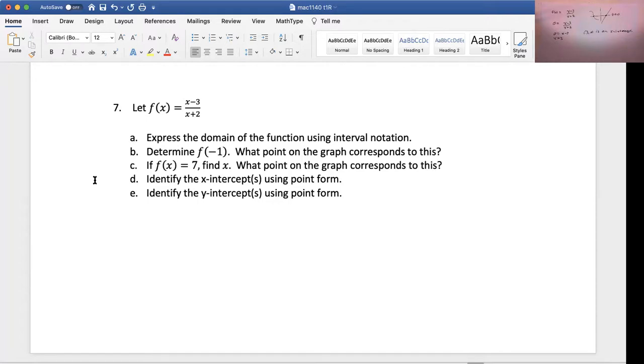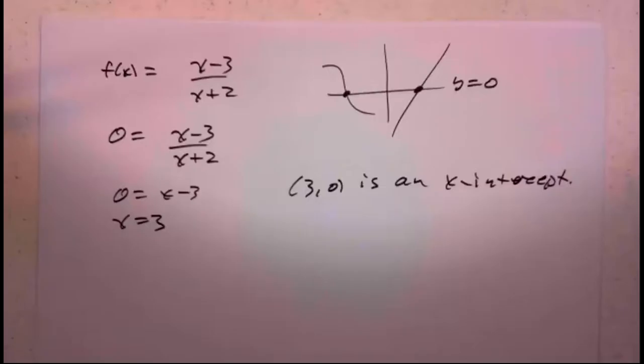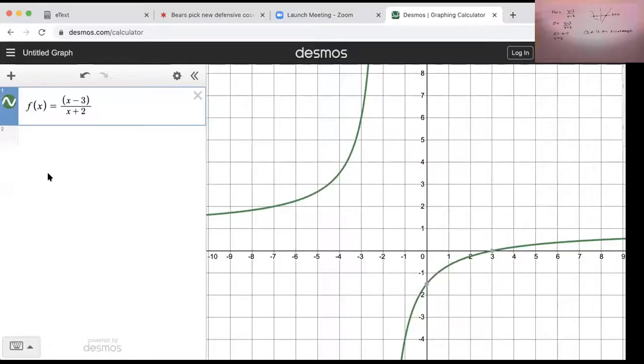So let's take a look at the graph and see if indeed that's the case. I like point form for these things. 3, 0 looks good, doesn't it? 3, 0 looks good for our x-intercept.